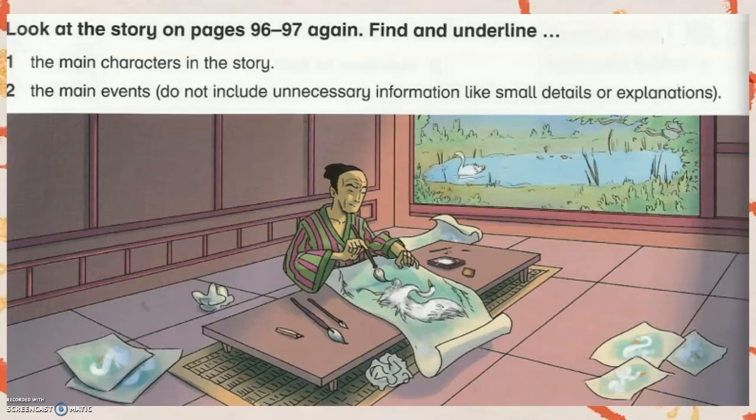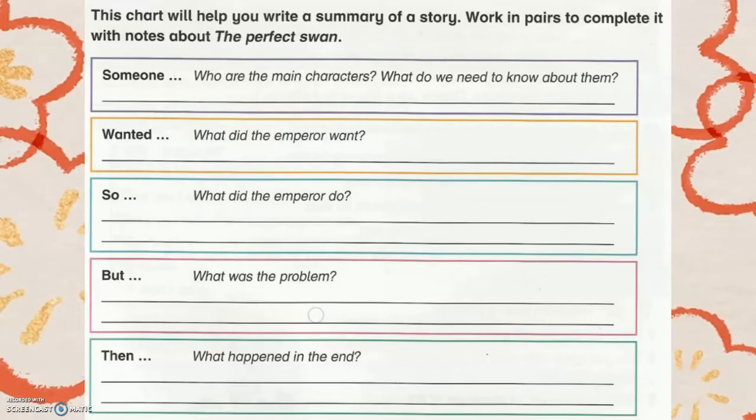Look at the story on pages 96-97 and find and underline the main characters in the story. The main events do not include unnecessary information like small details or explanations. This chart will help you write a summary of a story. Write in pairs to complete it with notes about The Perfect Swan.